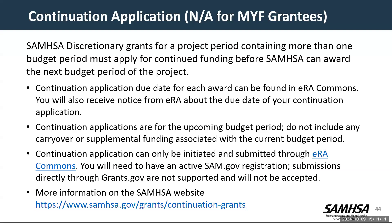For grants awarded on an annual basis, you will submit a continuation application for each award. The continuation application can be found in ERA Commons, typically due February 4th, 2025 for the upcoming application. Continuation applications are for the upcoming budget period only — please do not include any carryover or supplemental funding associated with the current budget period. These can only be initiated and submitted through ERA Commons. You will need to have an active SAM.gov registration, and submissions directly through grants.gov are not supported. More information can be found on the SAMHSA website. If your grant is multi-year funded, you will not submit through ERA Commons ERA Assist — you will submit the components via the ERA Terms Tracker as a term, and you will find information on your notice of award.